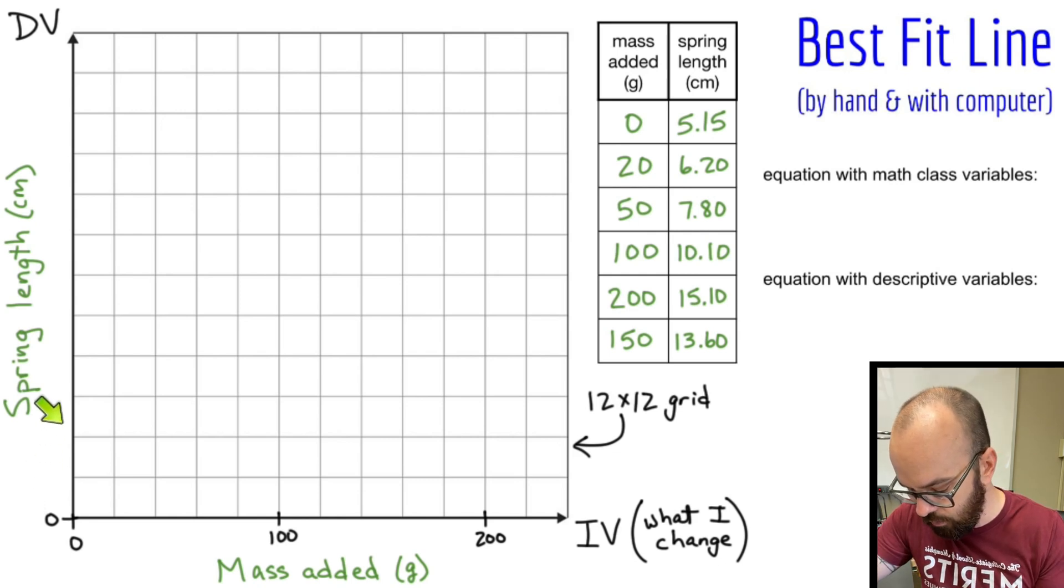So two, four, six, eight, 10, and then 12, 14, 16, 18, 20 right there. So let's pop those points. Here I have zero comma 5.15, 20 comma 6.2, et cetera, et cetera. My graph looks pretty linear.